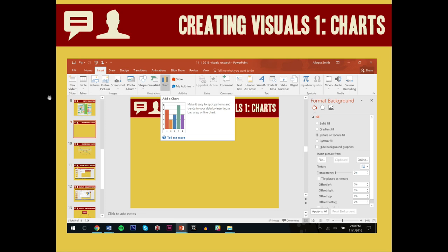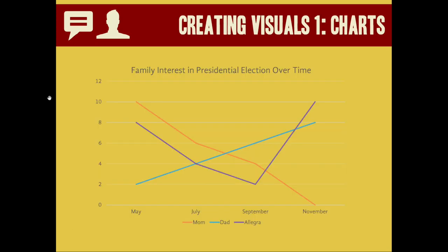So if you go to insert and chart, you can create a line graph, a bar graph, a pie chart, and all of these other interesting options. Note this simple chart that I made about my family's interest in the presidential election in 2016. It's a very easy way to demonstrate that my father's interest gradually went up, my mother's interest gradually went down, and mine reached a low in September and then sharply peaked leading up to the election in November.